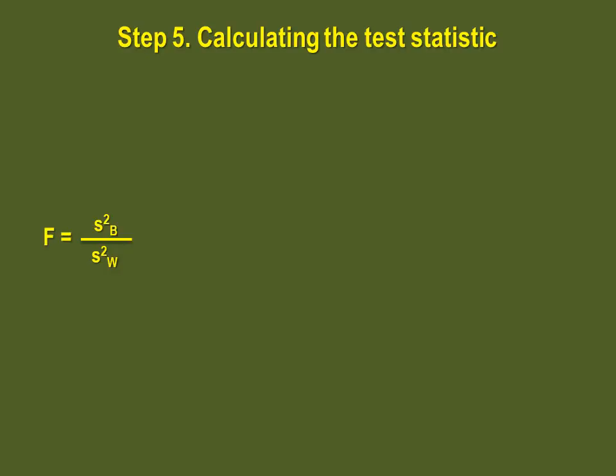We are now ready to calculate our actual F value. Let's start with the numerator, the between group variance. Here is the equation for this. First, we have the mean of a given sample to which we subtract the grand mean.